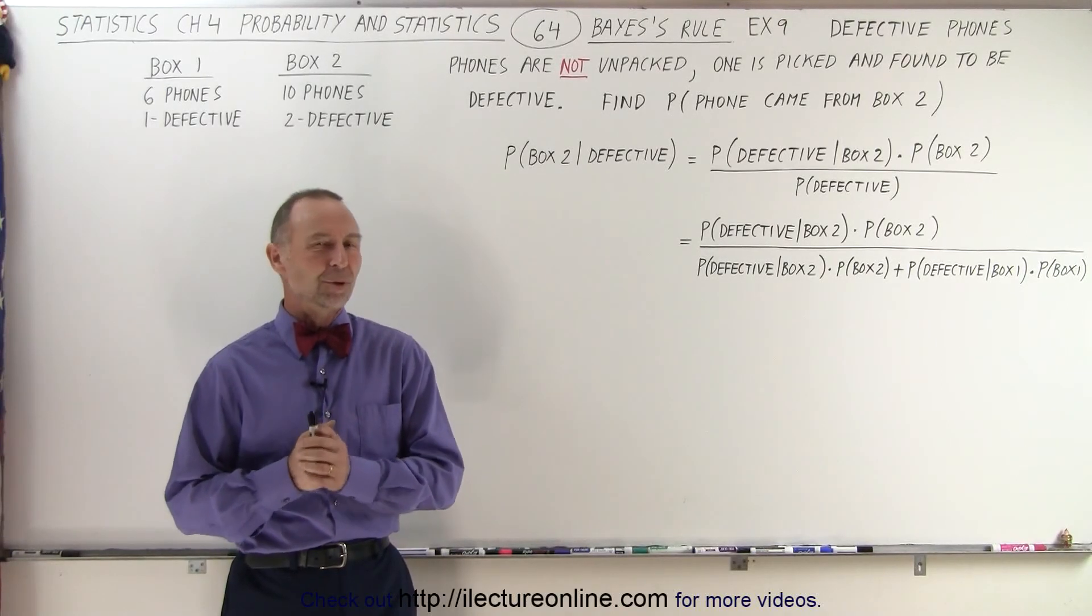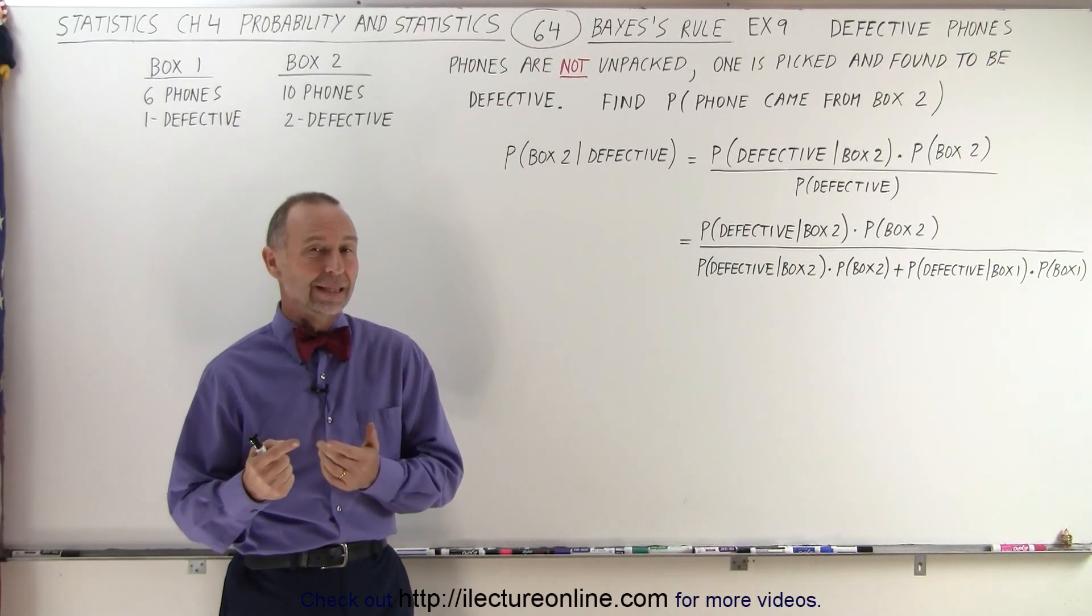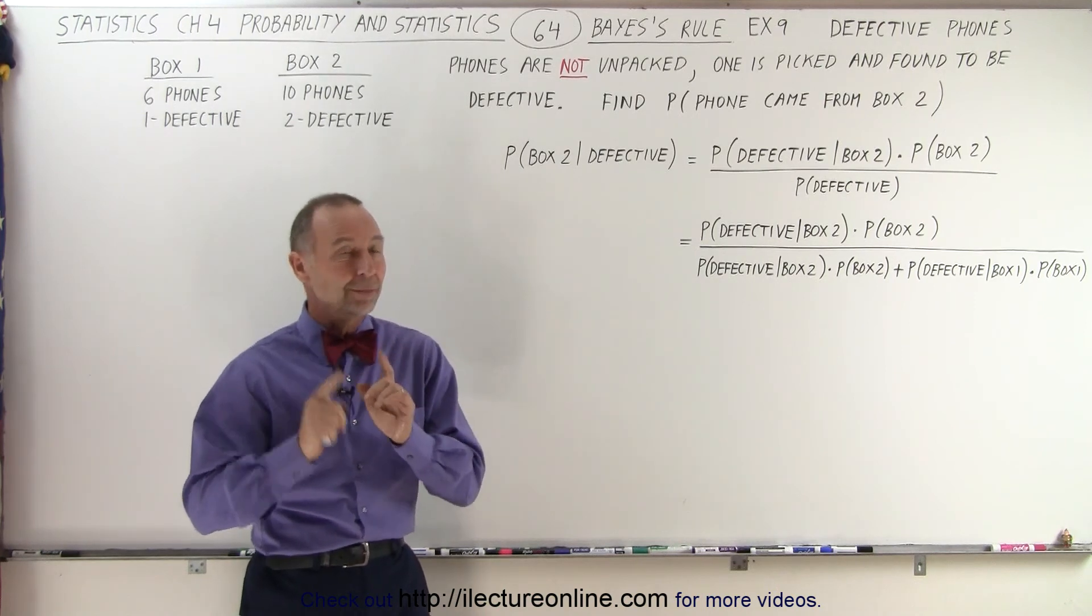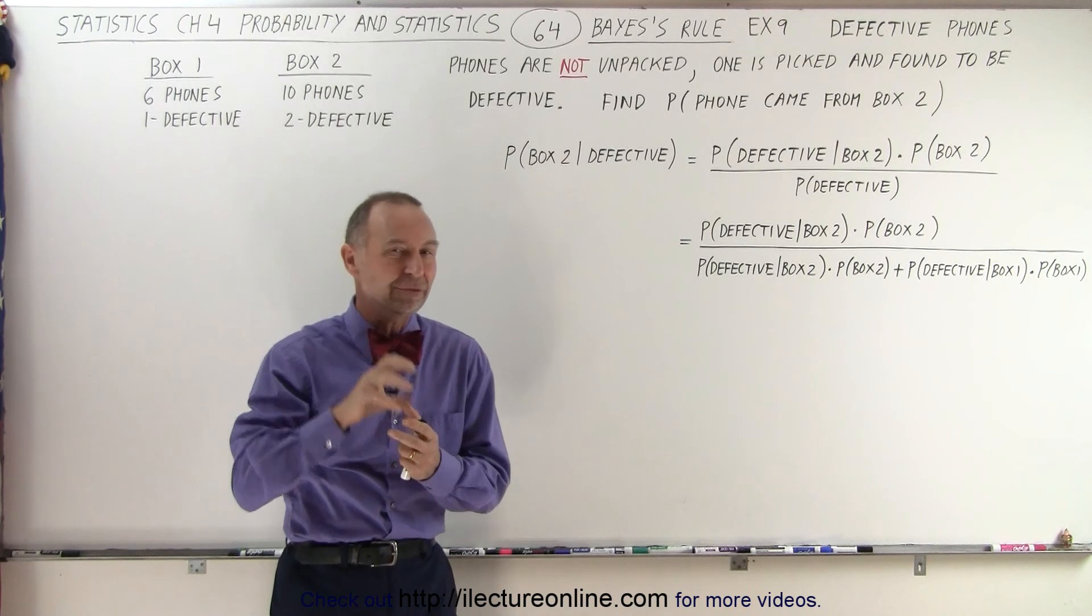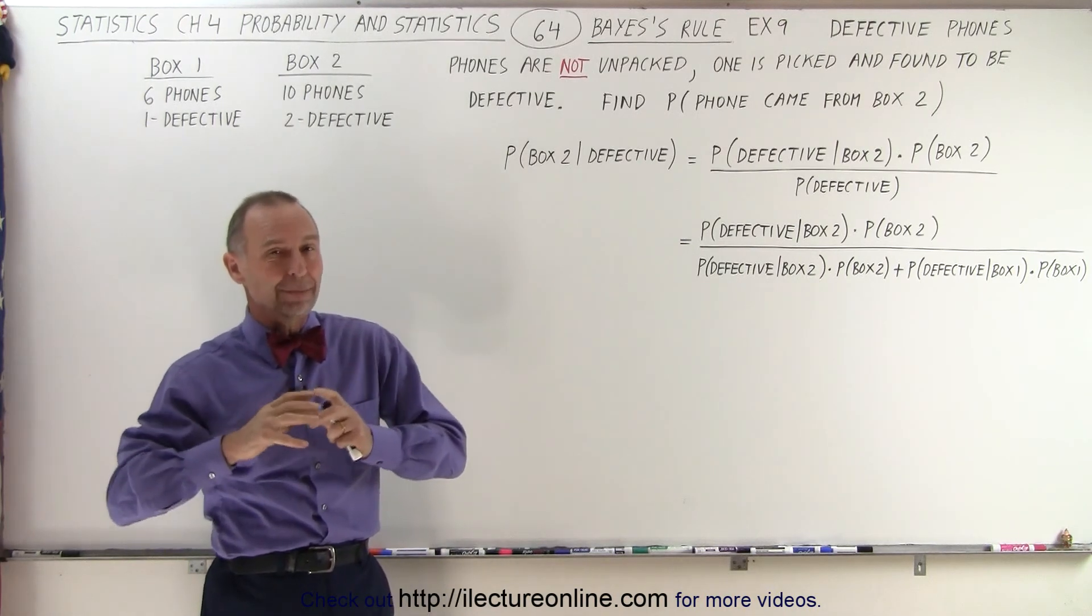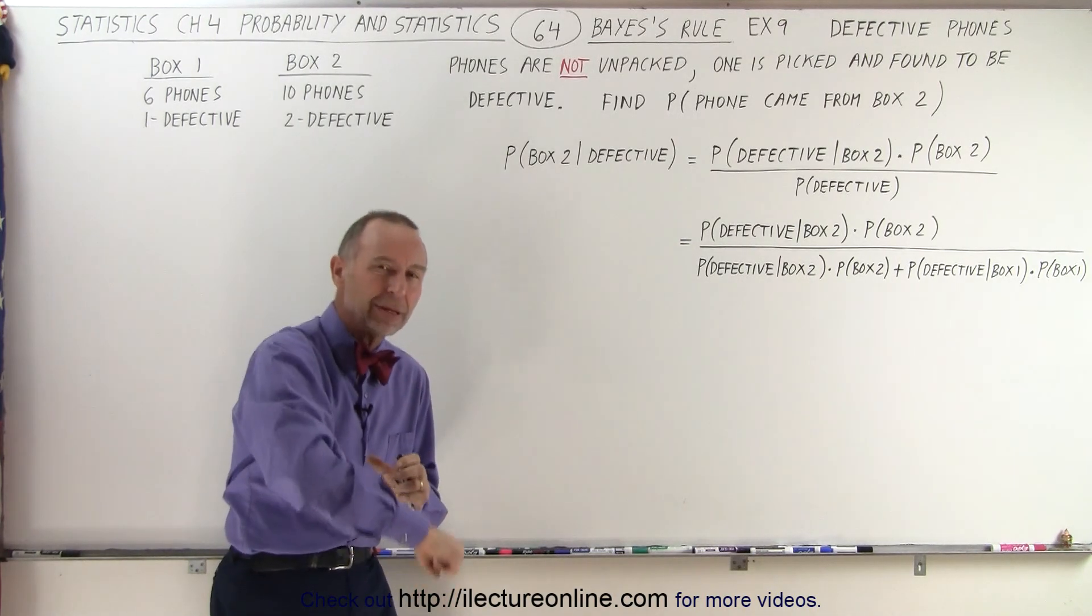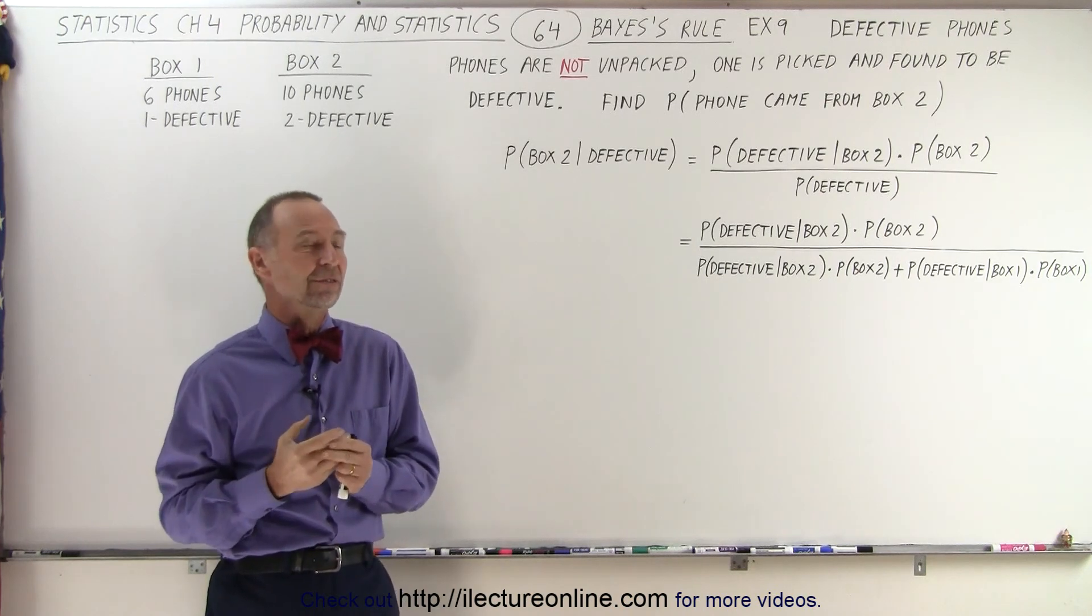Welcome to Electronline. So this is the same example we did on the previous video with one big difference. The phones are not unpacked and we pick a phone at random, which means we first need to pick a box at random and then we pick a phone out of there and we find that that phone was defective.